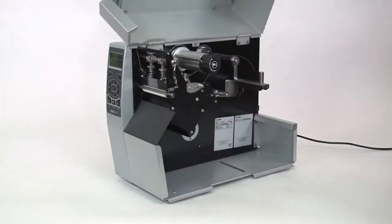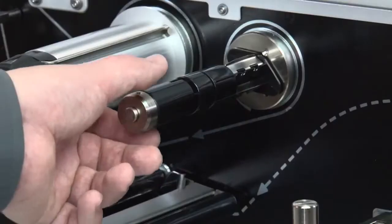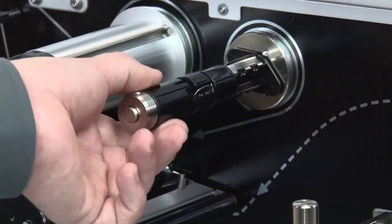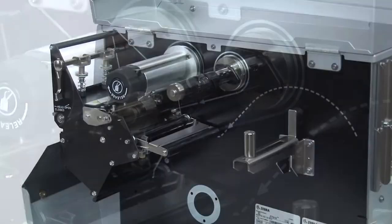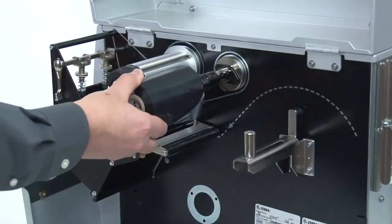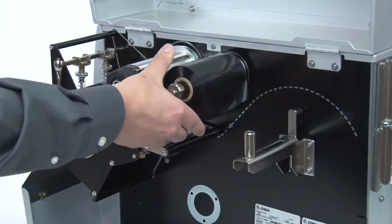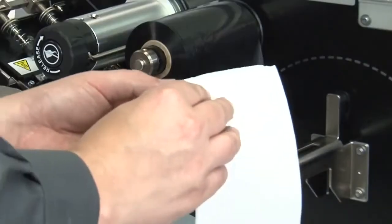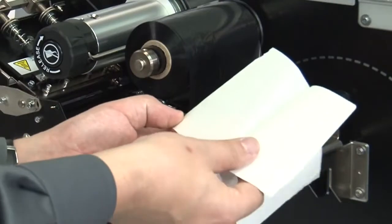Open the media door. Align the segments of the ribbon supply spindle. Place the roll of ribbon on the ribbon supply spindle with the loose end unrolling clockwise. Tear off a strip of media, peel a label from the media strip.